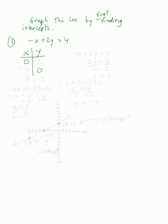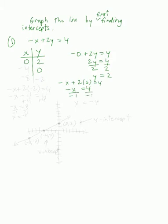Let me go ahead and plug in 0 for x first. We get negative 0 plus 2y equals 4. But negative 0 is just 0, so it becomes 2y equals 4. Divide by 2, we get y equals 2. Now let's put 0 for y. We get negative x plus 2 times 0 equals 4. But 2 times 0 is 0, so it just becomes negative x equals 4. Divide by negative 1, we get x equals negative 4.